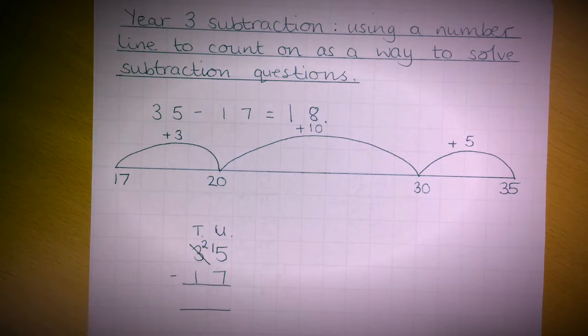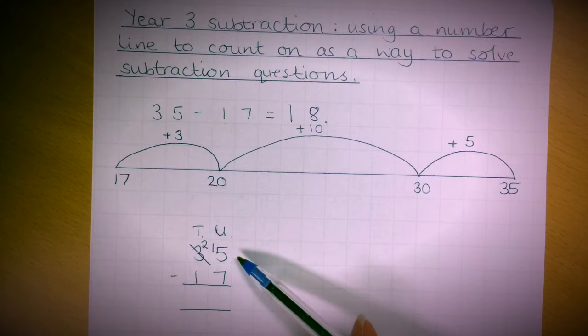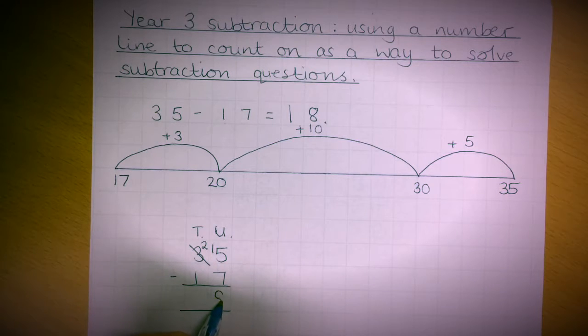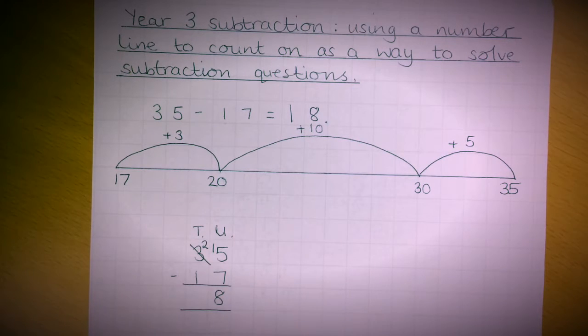And give that 10 to the units column, so that becomes 15 subtract 7, which is 8. Then 2 take away 1 is 1.